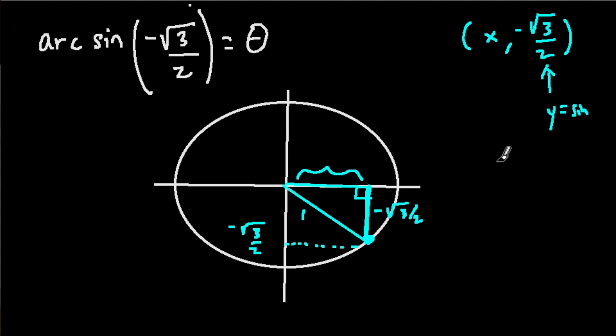I've got this right triangle. I know that the hypotenuse is equal to 1. And I know that this leg, which is the y value, equals negative √3 over 2. I want to know what this leg is. So the Pythagorean theorem says that x squared plus negative √3 over 2 squared, that's going to be positive 3 over 4, equals our hypotenuse squared, 1. x squared equals, I'm going to subtract 3 fourths from both sides, x squared equals a fourth. Take the square root of this, and we get x equals 1 half. So that means this value is 1 half.